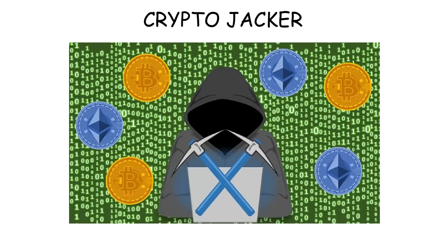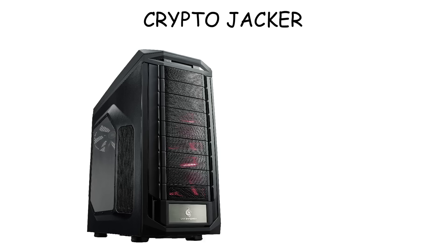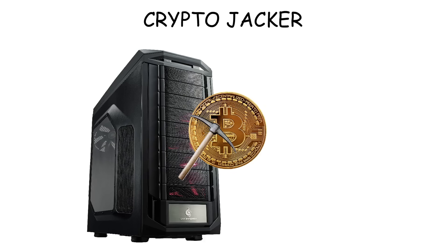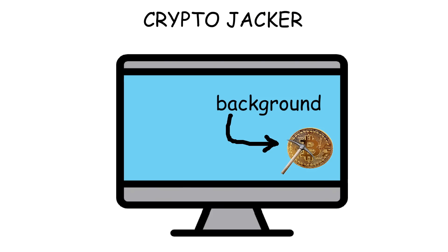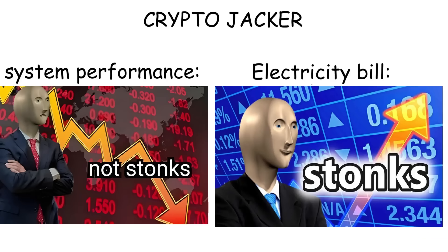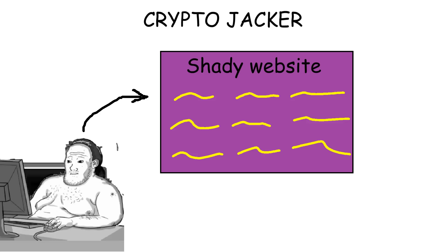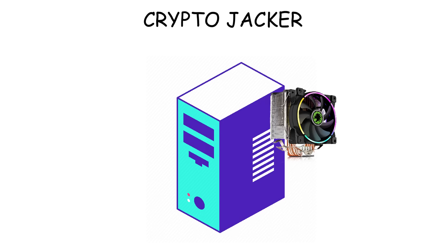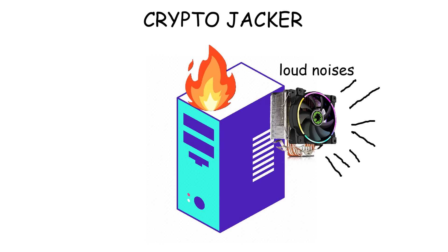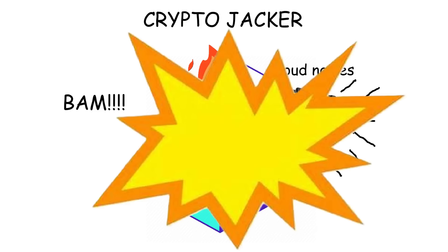A cryptojacker is a type of malware that hijacks a computer's processing power to mine cryptocurrency without the user knowing it. It runs silently in the background, slowing down the system and increasing electricity usage. For example, a hacker may inject cryptojacking code into a website, so every time someone visits that normal-looking site, their device unknowingly starts mining cryptocurrency for the hacker. The user might notice their fan running loudly or the device overheating, which can break components over time.